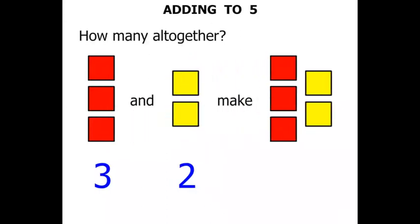Let's bring them over and see how much they make together. We add them together. 1, 2, 3, 4, 5. So 3 and 2 make 5.